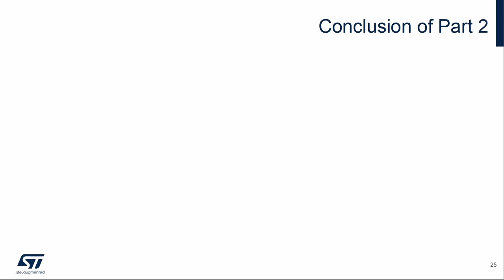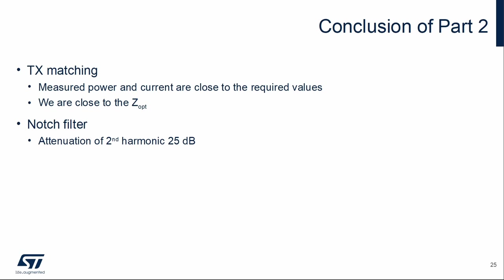In this part, we focused on the transmitter matching and notch filter. In the transmitter matching part, we optimized the output power and current consumption. The load impedance of the power amplifier output is close to the optimal impedance. The notch filter attenuates the second harmonic by about 25 dB. Following blocks have impact to the matching network, so parameters as output power and current consumption will change a bit. Final optimization must be done later, after the transmitter path is complete.